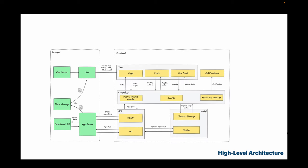Let's look closer at each segment of the architecture. The first one is the view – the layer responsible for displaying the user interface. It consists of three components: Feed page, responsible for showing the feed with the most popular or newest posts. Posts page, responsible for displaying a post, questions and answers. And the new posts page for editing and creating posts, which includes a text editor.